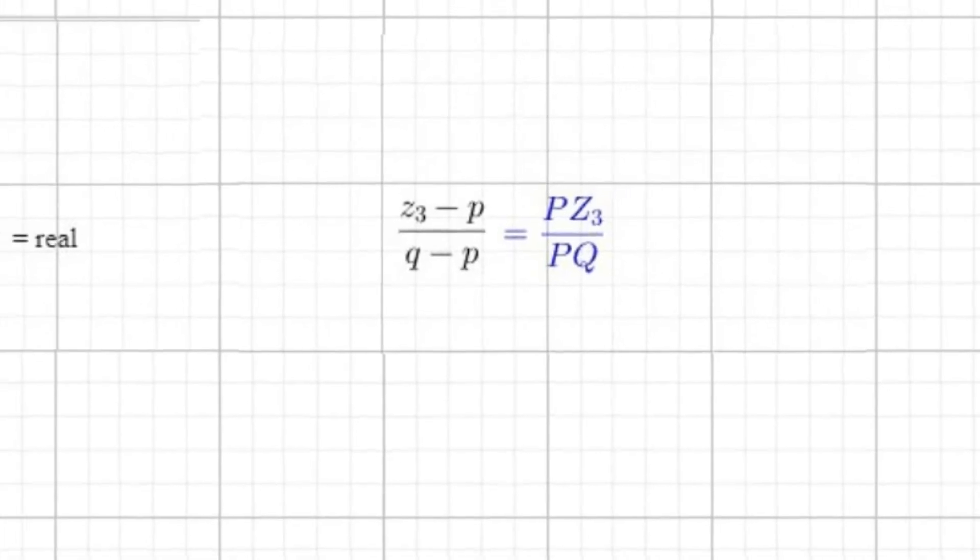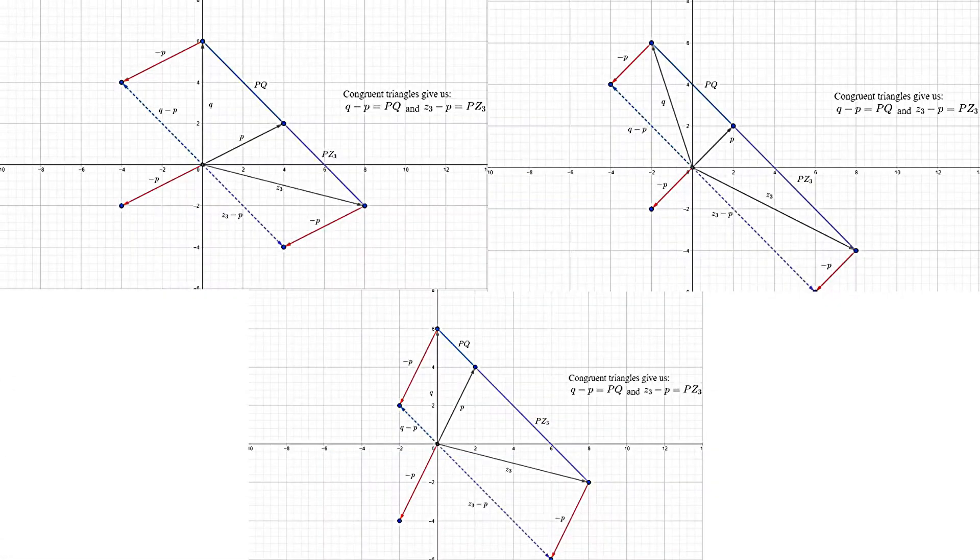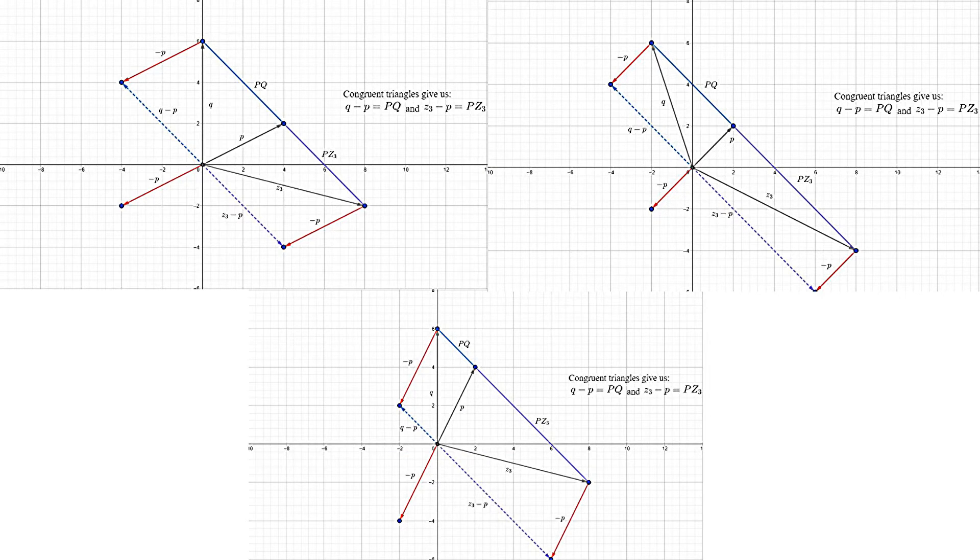Here I've drawn out several cases for three points, P, Q, and Z3, which are collinear, shown as the solid blue and purple lines above, along with separate vectors for Q, P, and Z3, respectively.